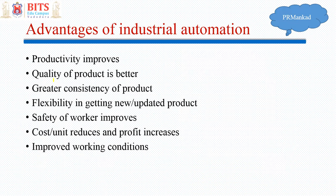In addition, industrial automation provides the following advantages: productivity improves, quality of the product is better, there is greater consistency of the product, and there is flexibility — if you want a new product you just have to program or make necessary changes in the automatic systems to get a product with new specifications. Safety of workers is also improved — in hazardous or dangerous situations you don't have to put workers at risk; you can use robots or automated machines. Cost per unit reduces and profit increases.